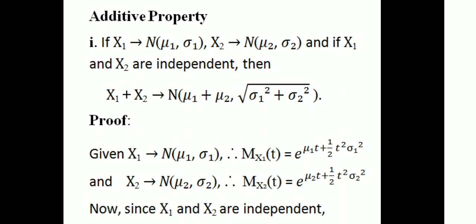The first property: if X1 follows normal distribution with parameters μ1 and σ1, and X2 follows normal distribution with parameters μ2 and σ2, and if X1 and X2 are independent, then X1 plus X2 follows normal distribution with mean μ1 plus μ2 and standard deviation √(σ1² + σ2²).